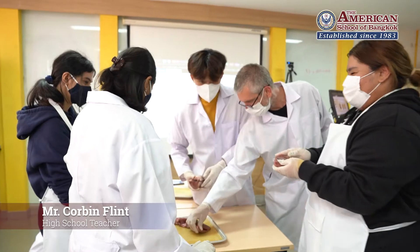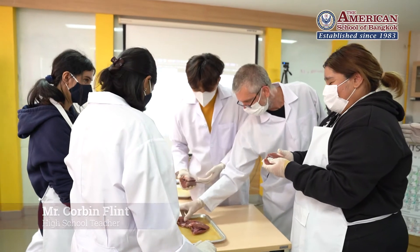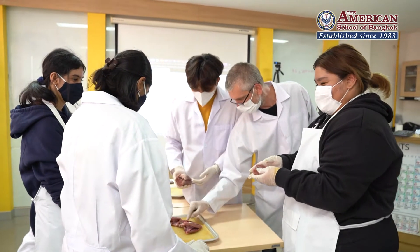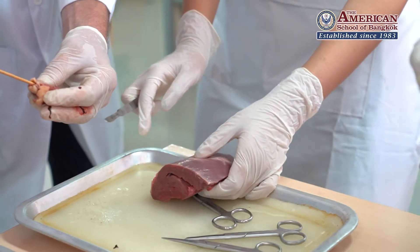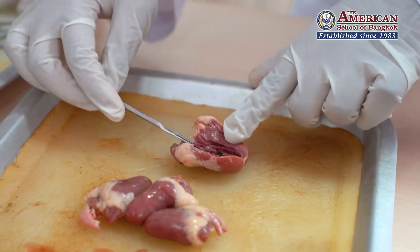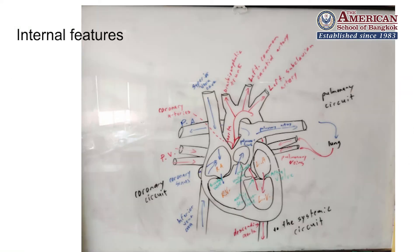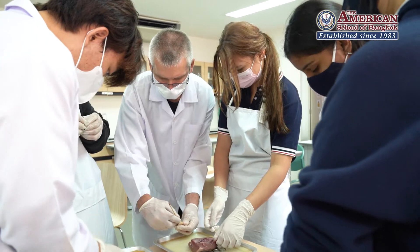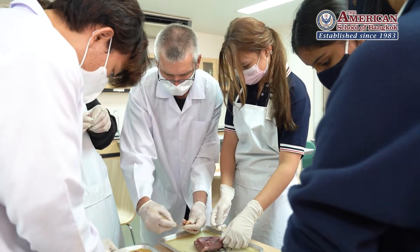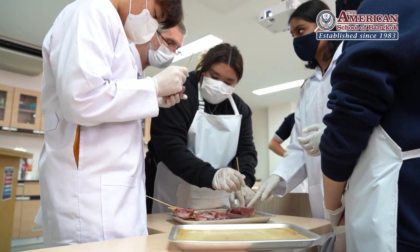Today in high school anatomy we did heart dissections — one was a pig heart, one was a chicken heart. They basically have the same features as a human heart does, and in human anatomy we basically have to find all the different things associated with those.